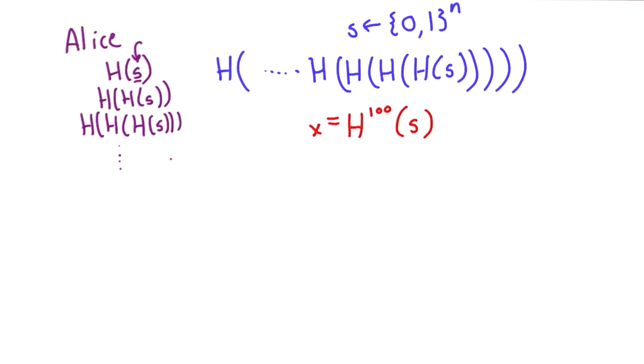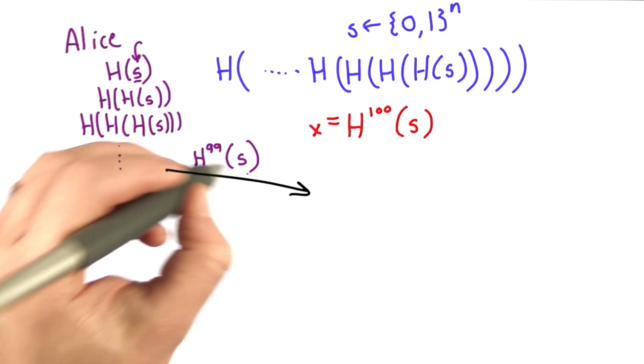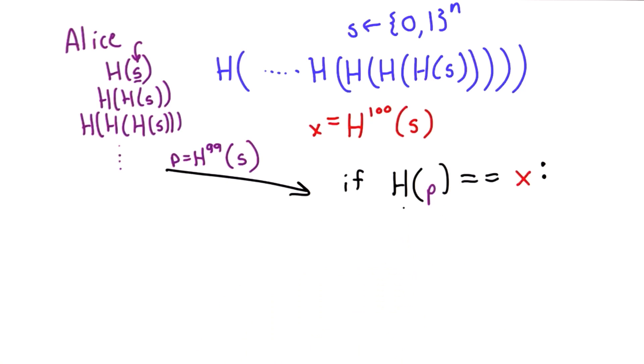So now the protocol to log in will be Alice will send the 99th value in this hash chain. What the server will do is compute the hash of p, check if it's equal to the stored value x.